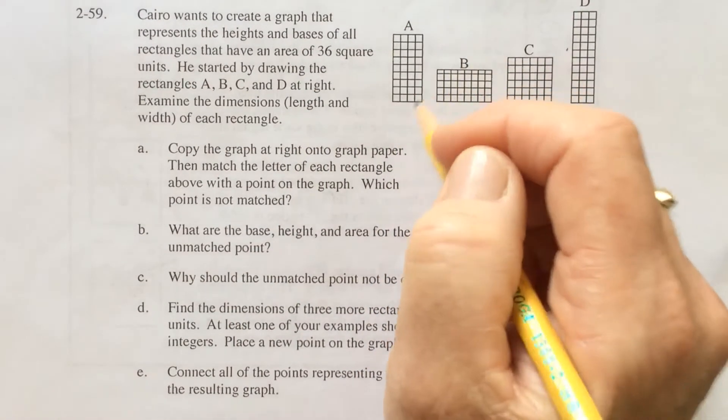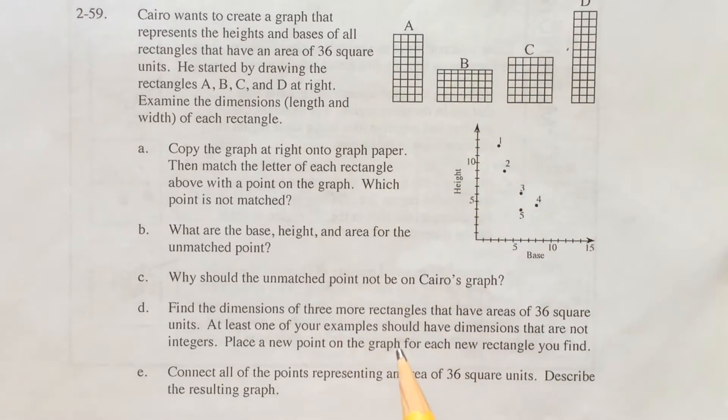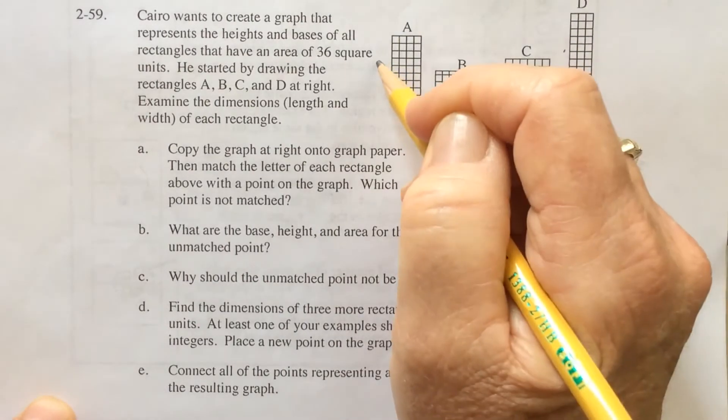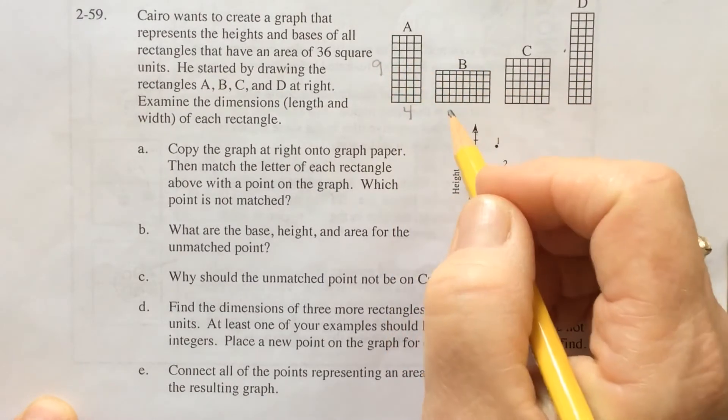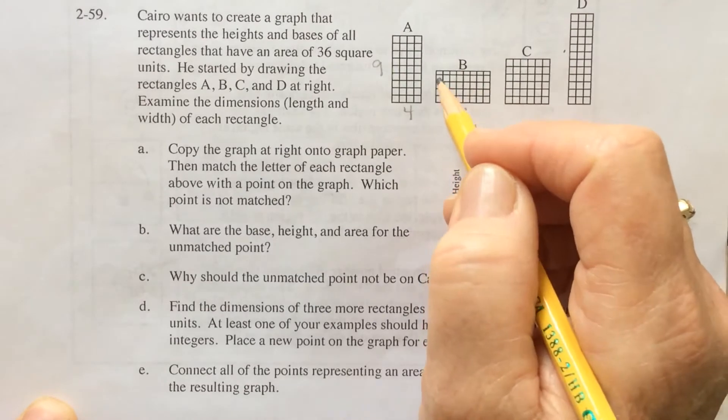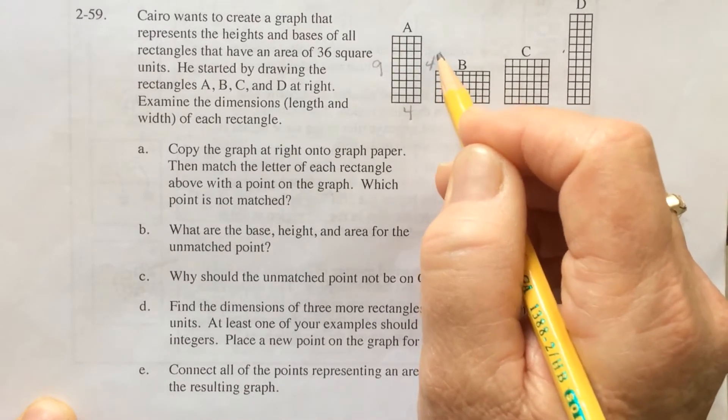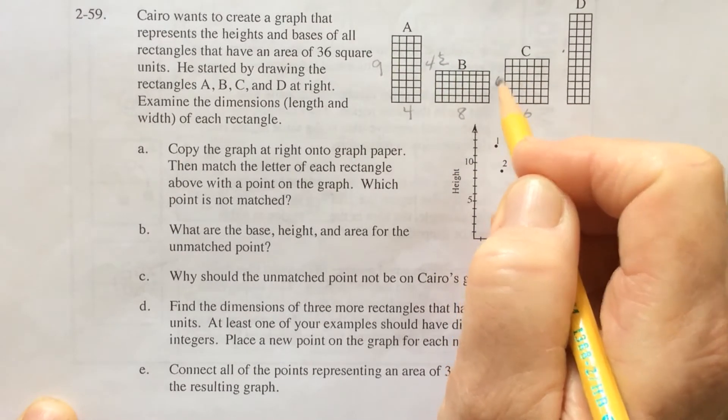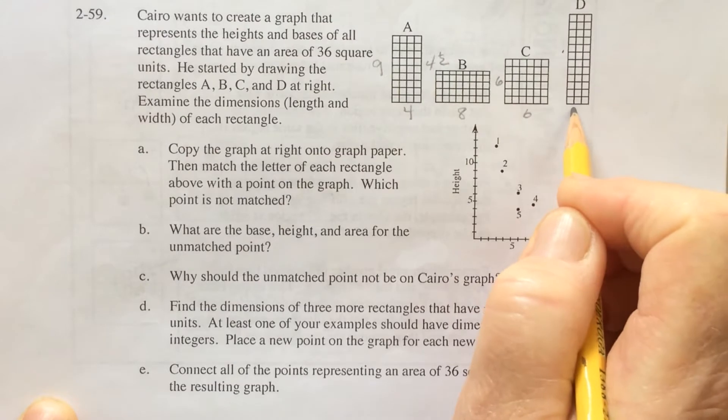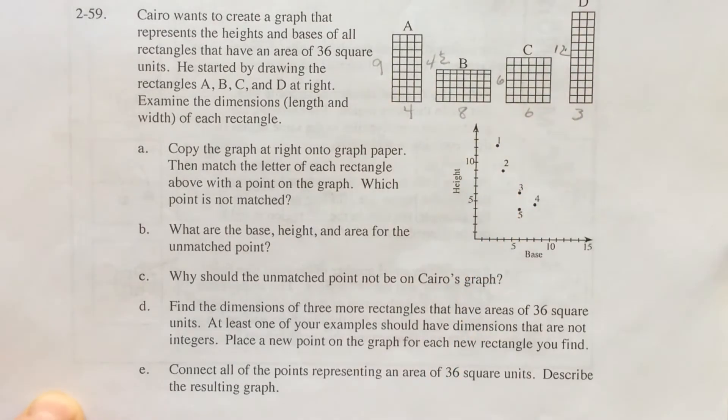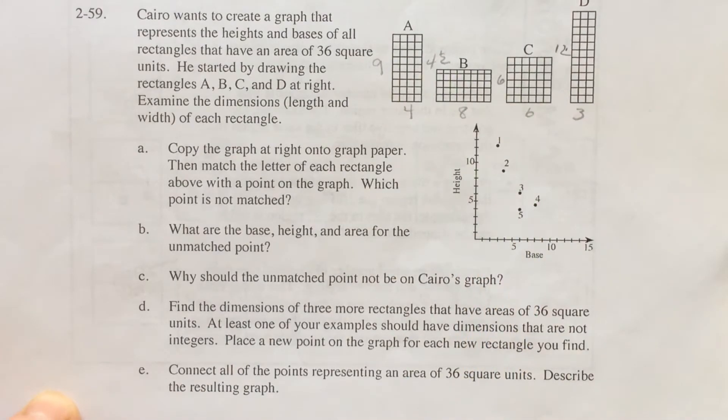So he drew these rectangles and they all have an area of 36. The first one has a base of 4 and a height of 9. This one has a base of 8 and it looks like the height is 4 and a half. This one has a base of 6 and a height of 6, and the last one has a base of 3 and a height of 12.